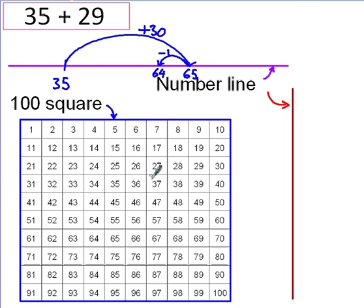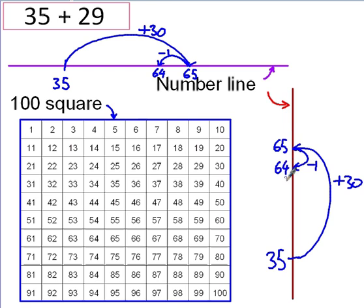On a vertical number line, if that's easier for you to imagine, then it would look like this. 35, add 30. I'm only kidding. I'm only meant to be adding 29. So, I'll take one away. 35, add 30, is 65. Take away one, 64. Our answer is 64 again.